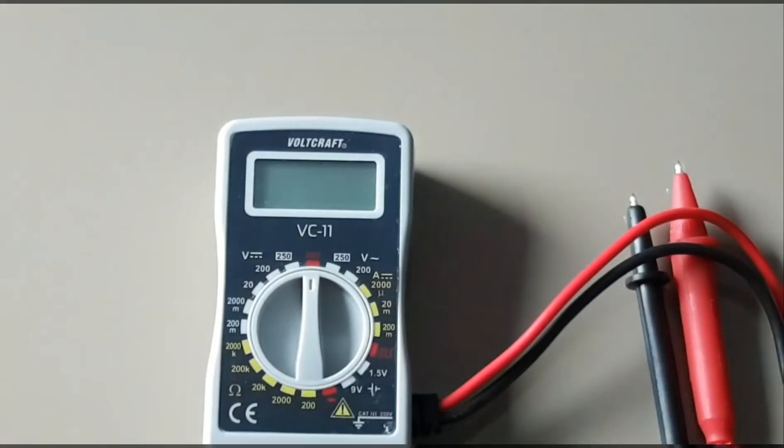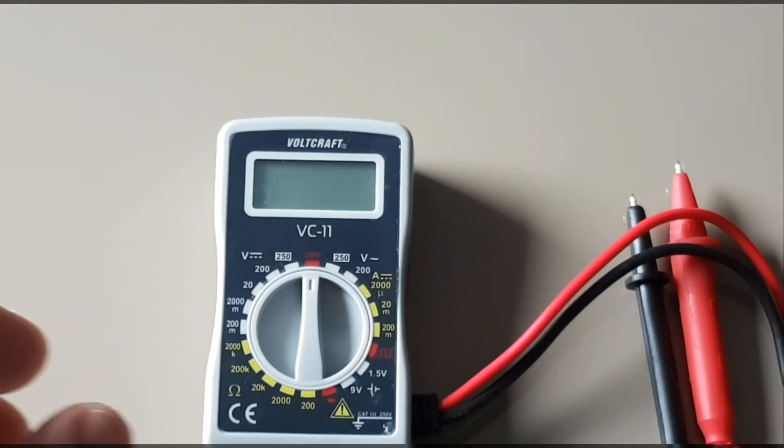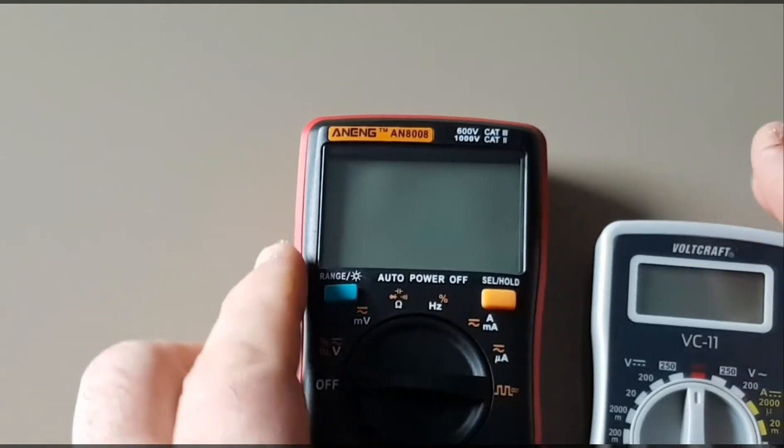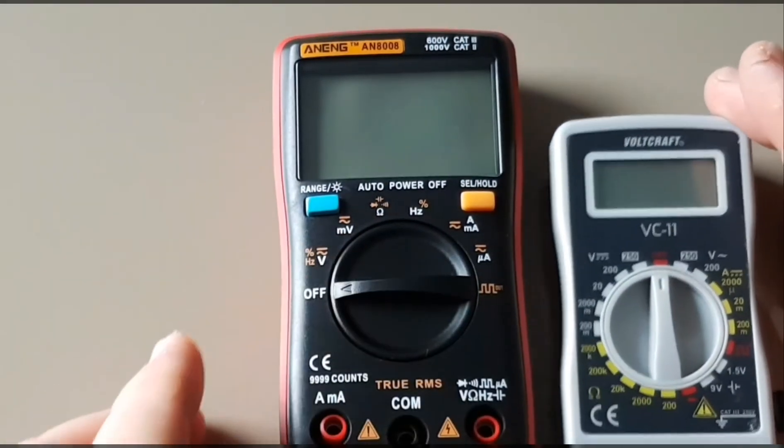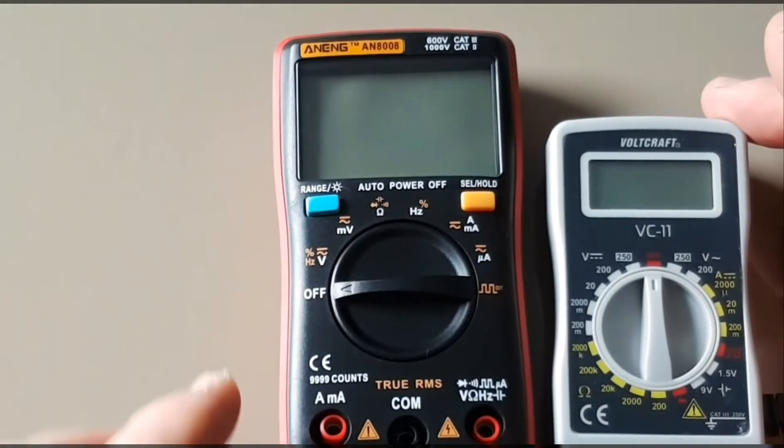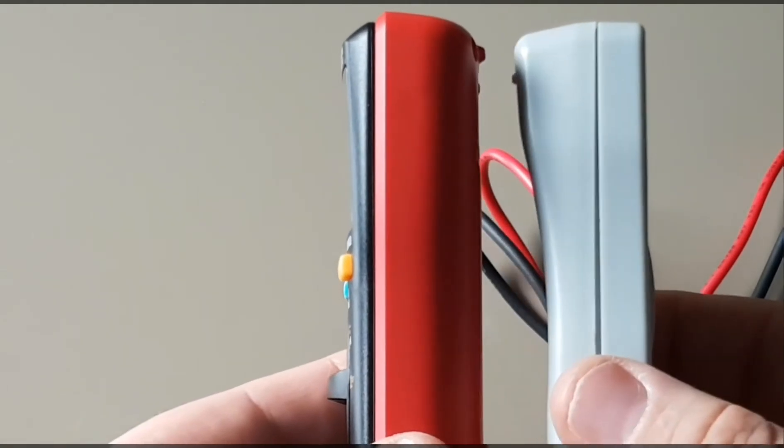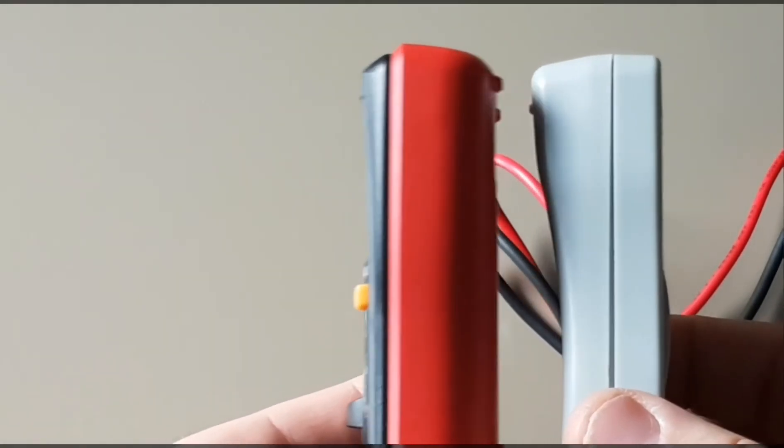In terms of size, this guy is relatively tiny. If we compare it against the Anning 8008, a super popular multimeter right now, you can see size-wise it's at least a third smaller. And if we look at the width, it's also definitely smaller width-wise.